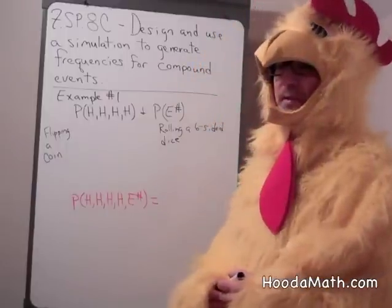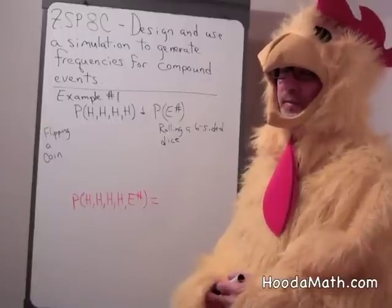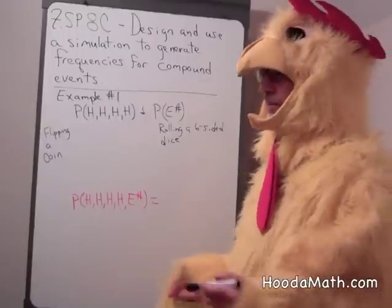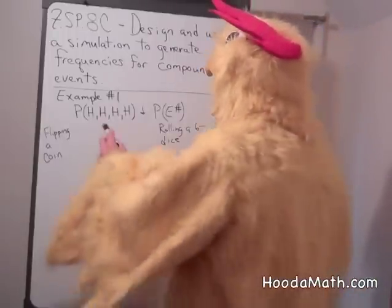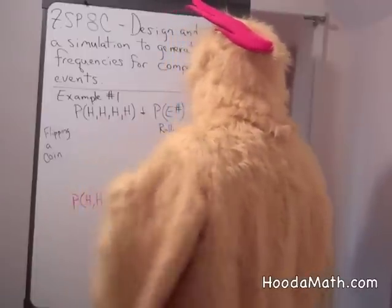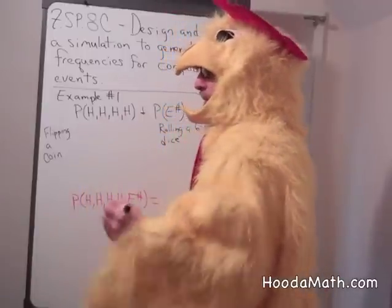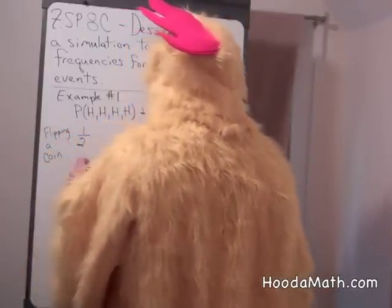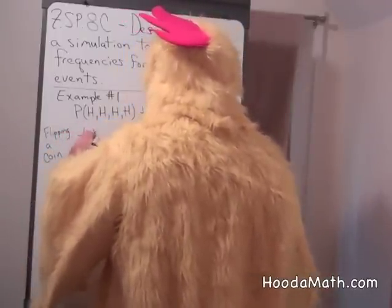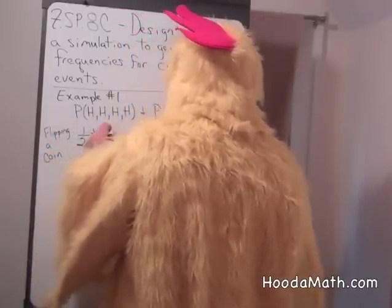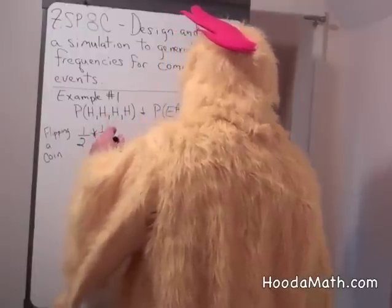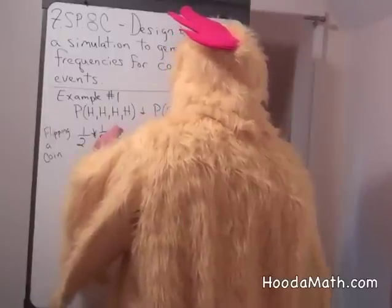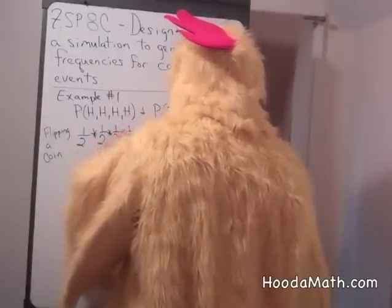Using the multiplication property of probability, we multiply the probability of getting heads four different times. The probability of getting heads once is one-half. As you can see, there's a pattern. Probability of heads one-half times the probability of heads, which is one-half.